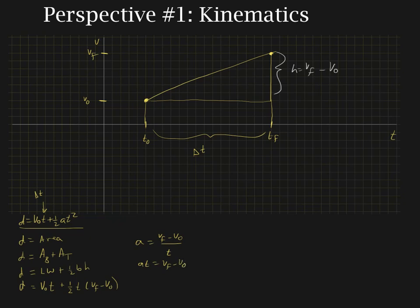So notice that we have v final minus v initial, v final minus v initial, right? So at is the same thing as writing v final minus v initial. So what do we do? D is equal to v initial t plus 1 half t times at, which becomes v initial t plus 1 half at squared. So we've proven our first equation using basic ideas of the graph.